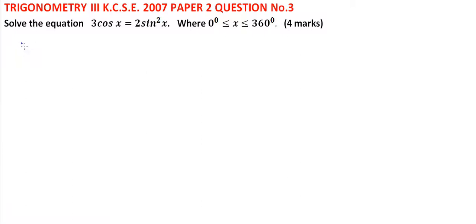So the equation 3 cos x equals 2 sin squared x, where the angle is between 0 and 360 degrees.